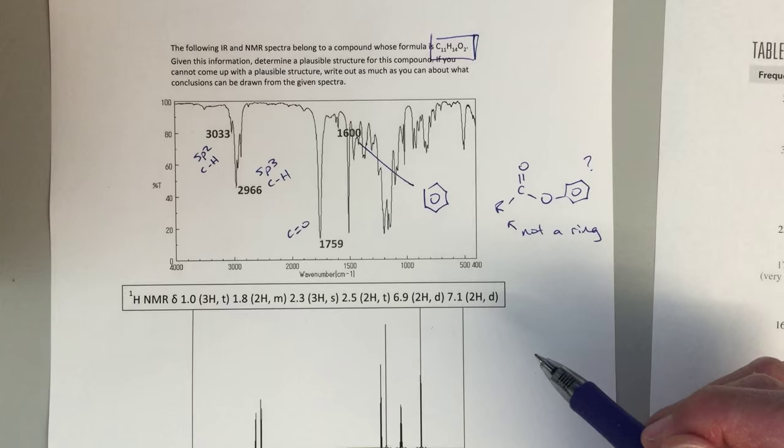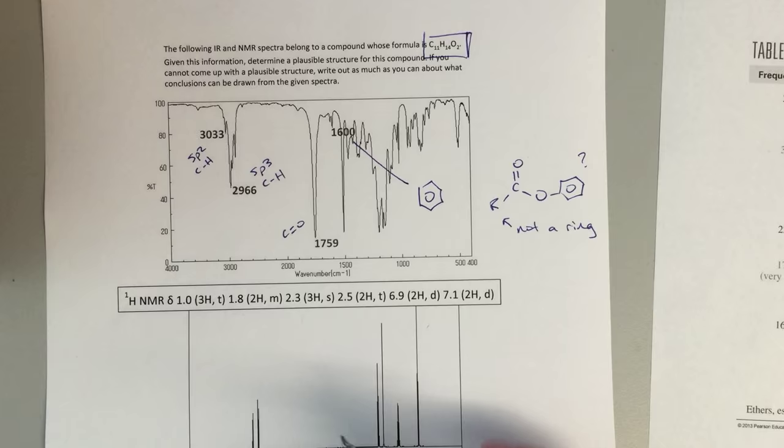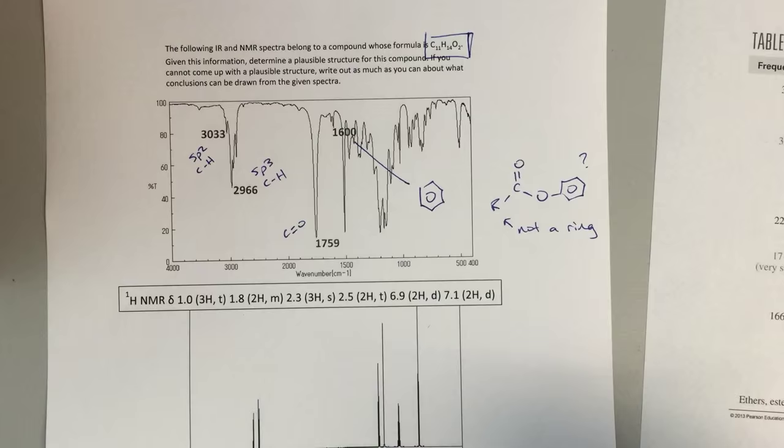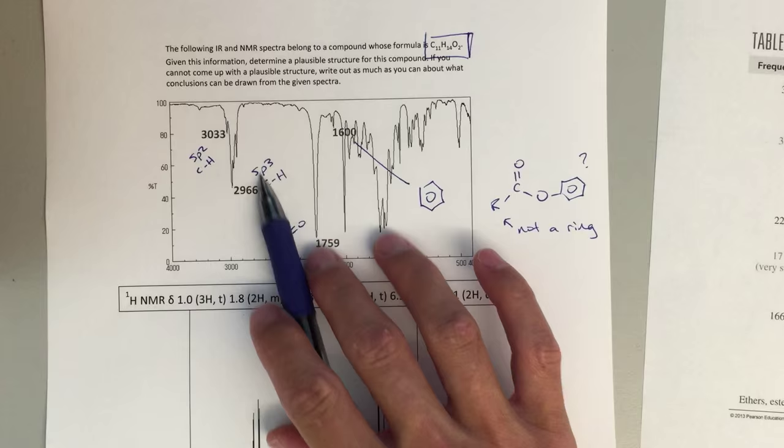So that's the conclusions I can draw from my IR, and these labels I think are very important, we need to have this information. The SP2 CH can come from my ring, so that makes sense. This other R group suggests that's going to be some sort of alkane, ethyl group, propyl group, something like that, probably coming off as this R group because I have these SP3 CHs.